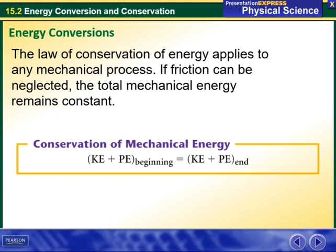The law of conservation of energy applies to any mechanical process. If friction can be neglected, the total mechanical energy remains constant. For conservation of mechanical energy, we have this formula: kinetic energy plus potential energy at the beginning will always equal the kinetic energy and potential energy at the end.